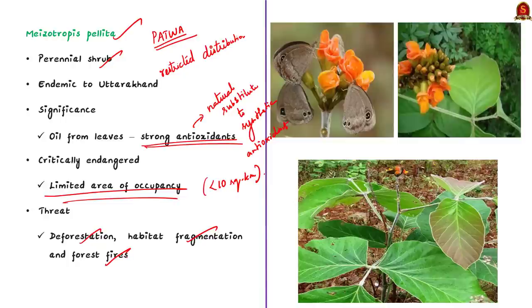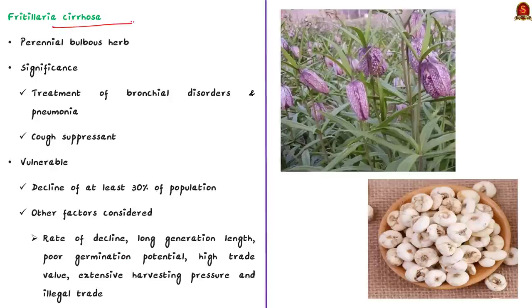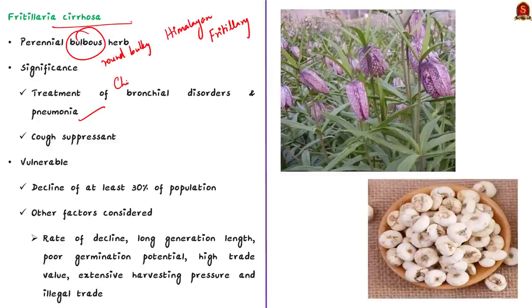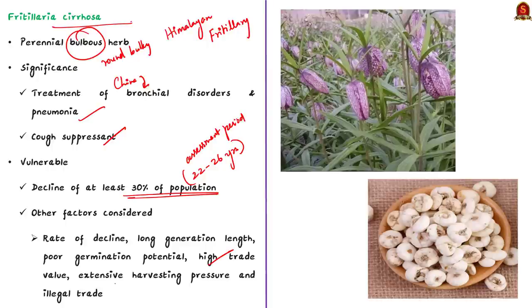The second plant species is Fritillaria cirrhosa, also known as Himalayan fritillary — a perennial bulbous herb. In China, it is used for treatment of bronchial disorders and pneumonia, and is also a strong cough suppressant. The study concluded a decline of at least 30% of its population over the assessment period of 22 to 26 years. Considering the rate of decline, long generation length, poor germination potential, high trade value, extensive harvesting pressure, and illegal trade, the species is listed as vulnerable.